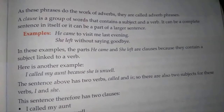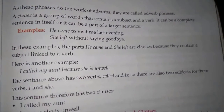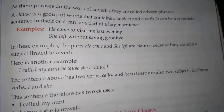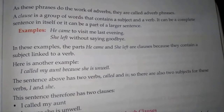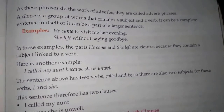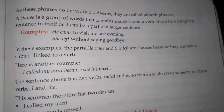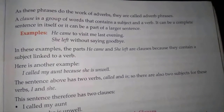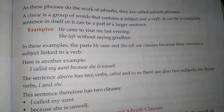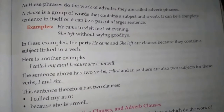A clause is a group of words that contains a subject and a verb. It can make complete sense on its own, or it can be part of a larger sentence. Example: 'He came to visit me last evening.' 'She left without saying goodbye.' In these examples, 'he came' and 'she left' are clauses because they contain a subject linked to a verb.